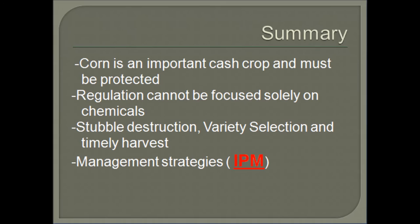In summary, corn is an important cash crop in the state as well as the nation and it should be protected. Regulation cannot be focused solely on chemicals, as chemicals only allow for control of a first or second generation. Stubble destruction, variety selection, and timely harvest are the best options to allow for control of this pest. Management strategies must, absolutely must, be based on an integrated pest management system.